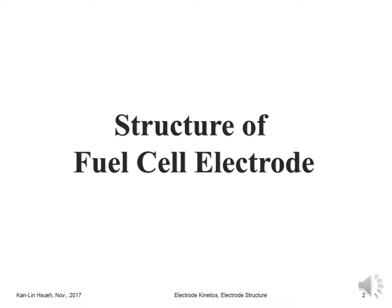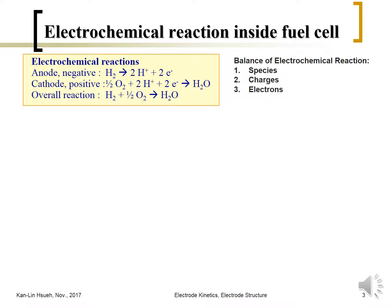We also describe the basic processes and the reactions taking place inside the electrode. At the anode, which we call the negative electrode, hydrogen is oxidized and releases electrons, generating a proton. At the cathode, which we call the positive electrode, oxygen is reduced into water by combining with the proton and the electron.